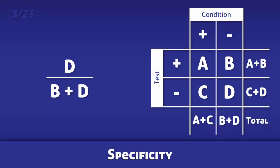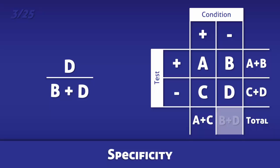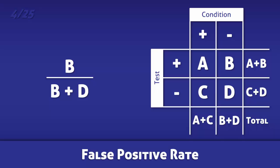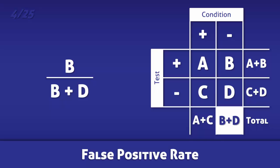For specificity, divide the number of true negatives by the total number of people without the condition. For the false positive rate, divide the number of false positives by the total number of people without the condition.